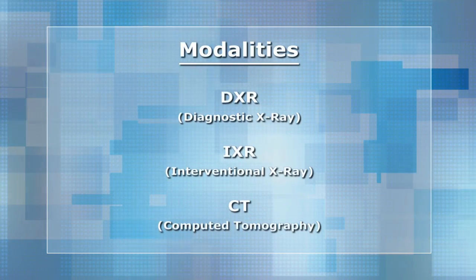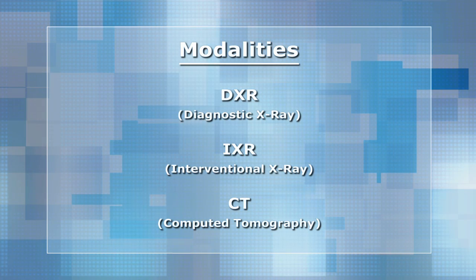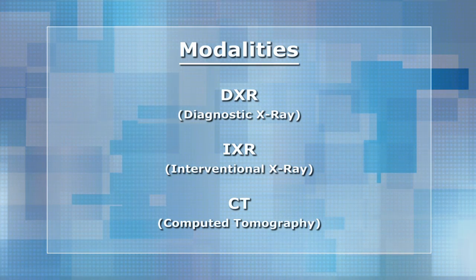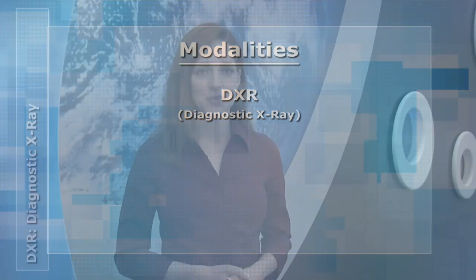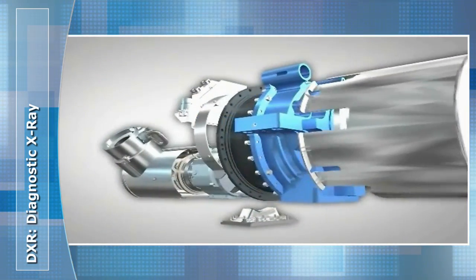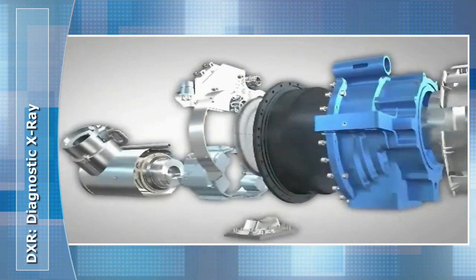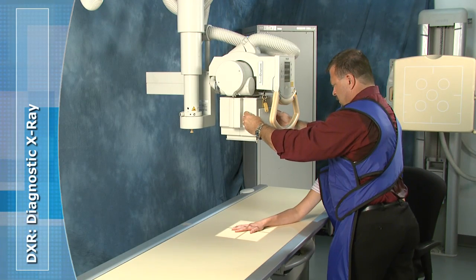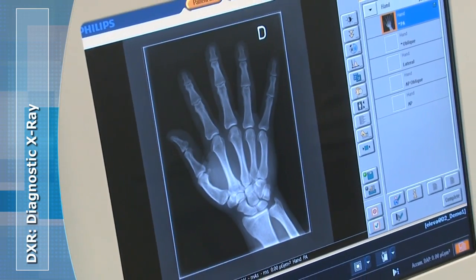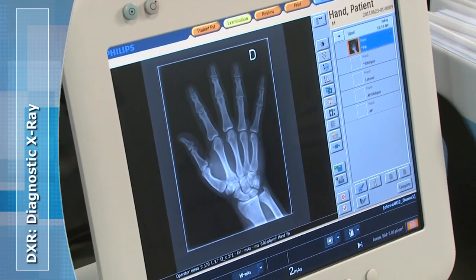The first three modalities — DXR, IXR, and CT — are all based on x-rays. You're probably familiar with DXR, or diagnostic x-ray, but likely refer to it as just plain x-ray. This is the machine looking for broken or fractured bones. It's inexpensive, quick, readily available, and Philips has over 50,000 DXR devices in use around the world to date.